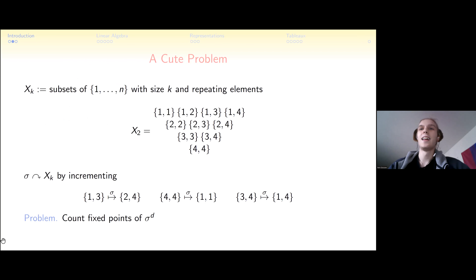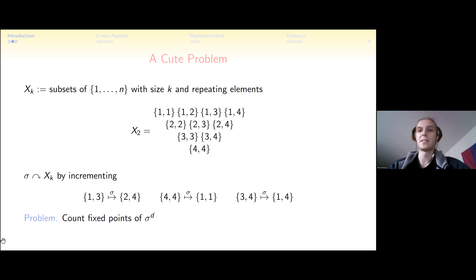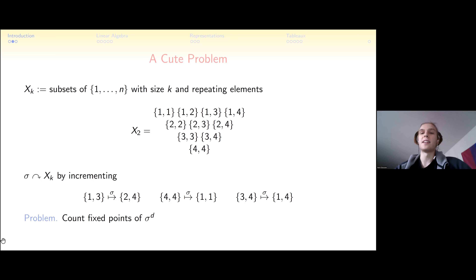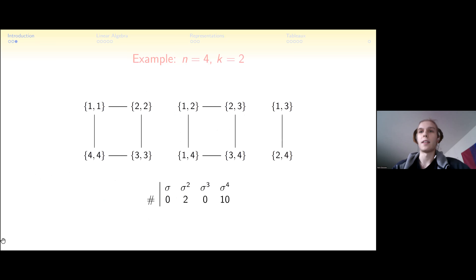Into the problem: we let X_k be the set of subsets of {1 to n} of size k, and we allow repeating elements. We define an action on our set — a bijection sigma which increments all the elements. The question is: we know the size of X_k is (n+k-1 choose k), but how many of these sets are fixed by d iterations of our sigma map?